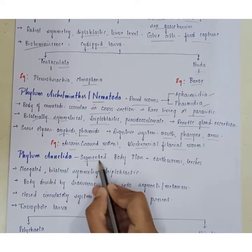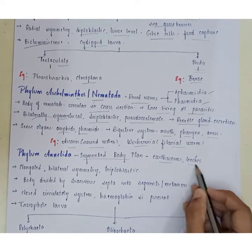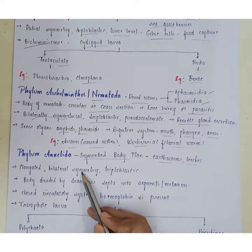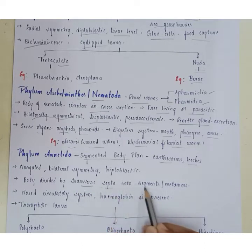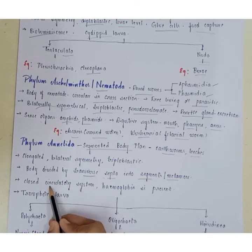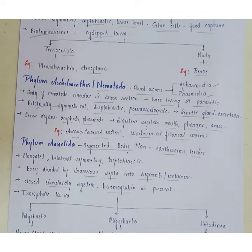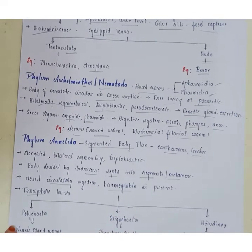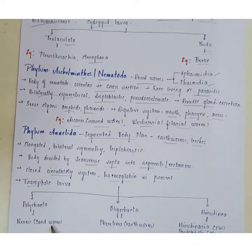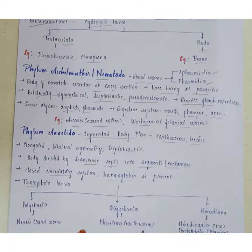Phylum Annelida contains segmented body plans — examples include earthworms and leeches. The body is elongated, bilaterally symmetrical, triploblastic, and divided by transverse septa into segments called metameres. They contain a closed circulatory system and also contain hemoglobin. The larval form is called trochophore larva. Classified into Polychaeta, Oligochaeta, and Hirudinea. Polychaeta includes Nereis (sandworm); Oligochaeta includes Pheretima (earthworm); Hirudinea includes Hirudinaria, Pontobdella, and Haemopsis.